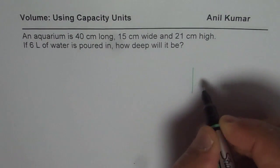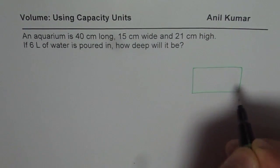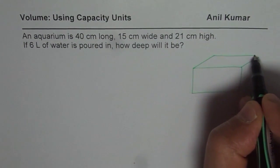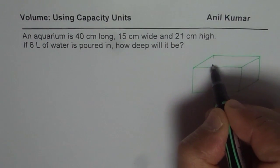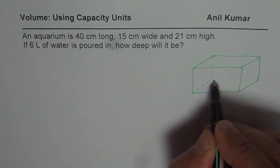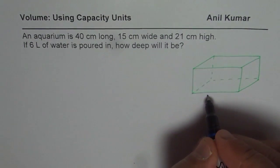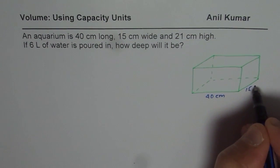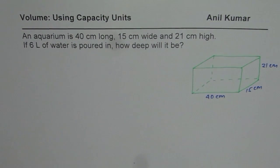I'd like you to sketch and then answer the question. Here is kind of an aquarium for us — we are taking it like a rectangular prism. We are given that it is 40 centimeter long, 15 centimeter wide and 21 centimeter high. If 6 liters of water is poured in, how deep will it be?